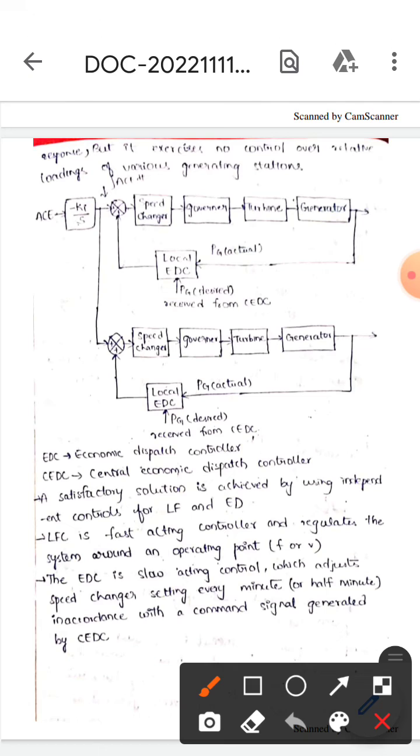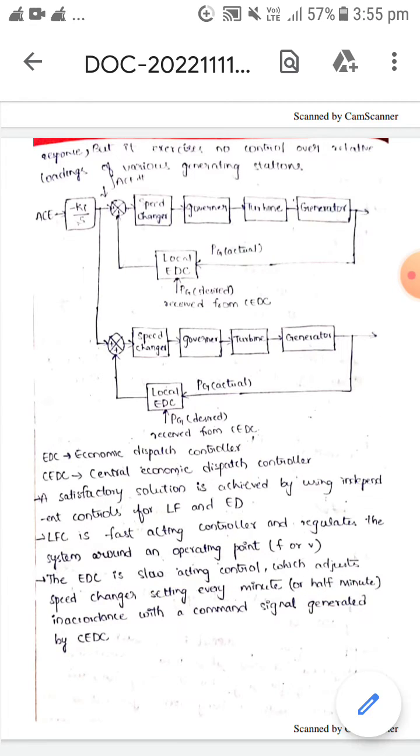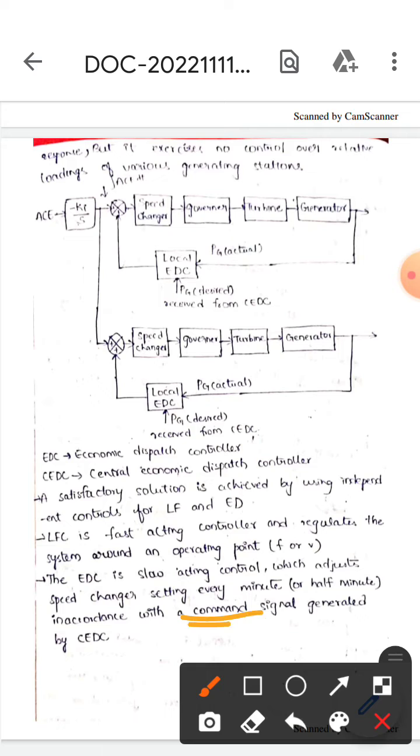Whereas the economic load dispatch is a slow acting controller which adjusts the speed changer setting every minute, or it can also adjust for every half minute. It all depends on the command signal generated by CEDC.